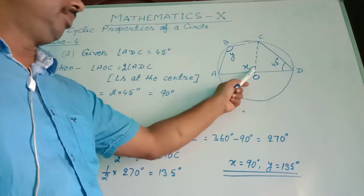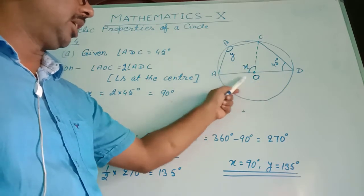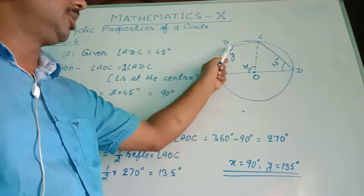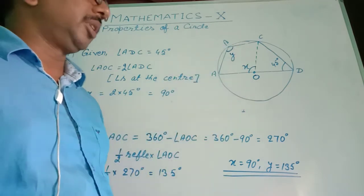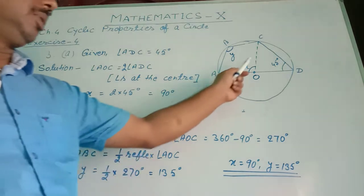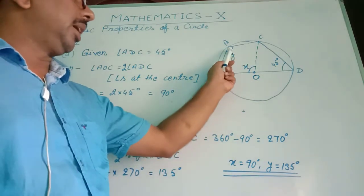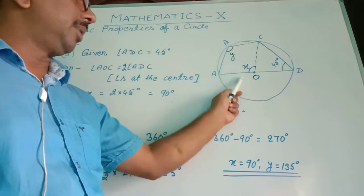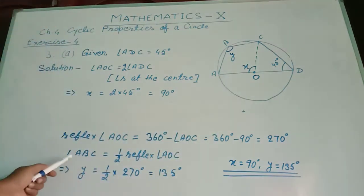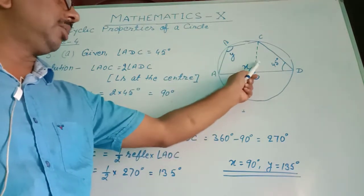The reflex angle AOC is the angle at the center, and angle ABC is the corresponding angle at the circumference. The angle at the circumference is half the angle at the center. Therefore, angle ABC equals half of the reflex of angle AOC.